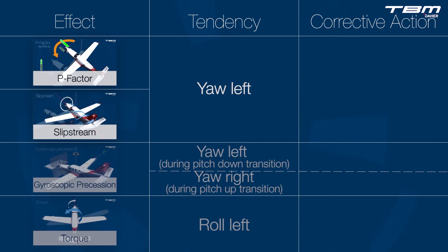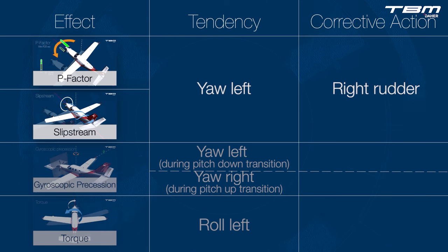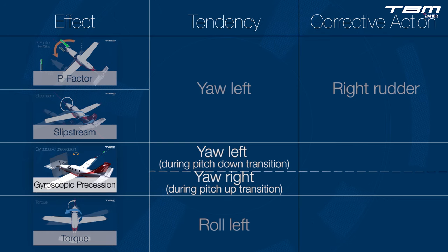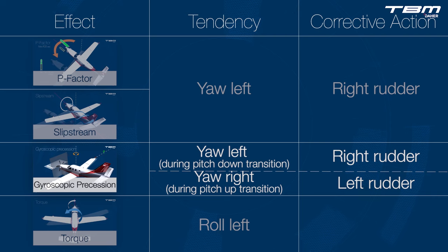Understanding the flight control inputs required to counteract the left-yawing tendencies created by P-factor and slipstream is straightforward — right rudder force is required. Gyroscopic precession, another yawing tendency, is apparent during pitch changes and is thus momentary, requiring brief right or left rudder force.